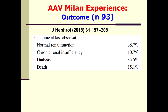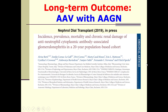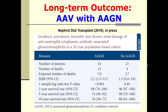A Malaysian experience for ANCA-associated vasculitis showed outcomes at last observation: normal renal function 38%, chronic insufficiency 10%, dialysis 35%, and death 15%. In terms of special situations, if ANCA-associated vasculitis occurs with ANCA-associated glomerulonephritis, the presence of glomerulonephritis is associated with worse outcome — higher 5-year and 10-year mortality.